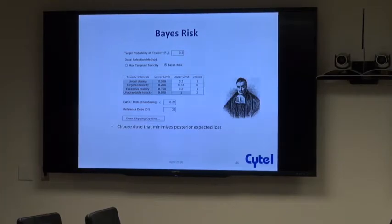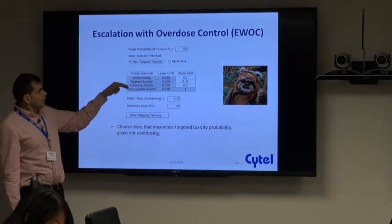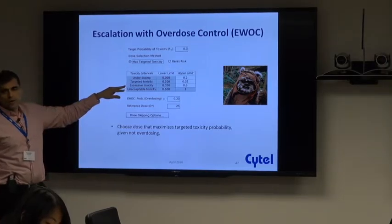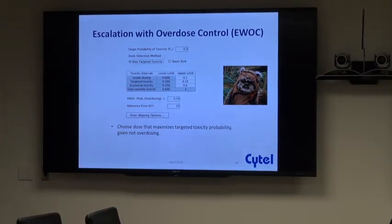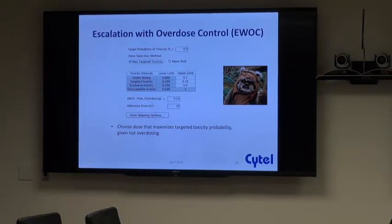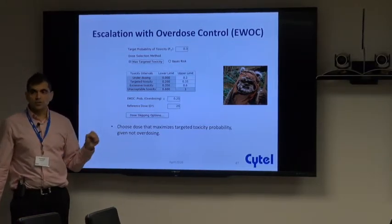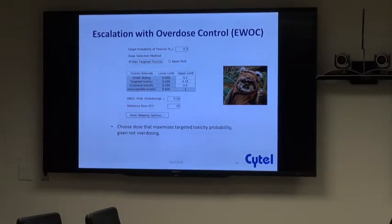Instead of using a point estimate for target toxicity, the BLRM breaks the probability space into intervals. You look at an interval of targeted toxicity rather than a point, and you maximize the chances of falling into that interval. The dose selected next is the one that maximizes your chances of falling into the targeted toxicity interval. They've also created intervals of underdosing and overdosing — excessive toxicity and unacceptable toxicity intervals — and the recommended approach is to first limit the probability of overdosing to a cap of around 25 percent, then subject to that, maximize probability of falling into the targeted toxicity interval. This is called escalation with overdose control (EWOC), a constrained optimization problem.